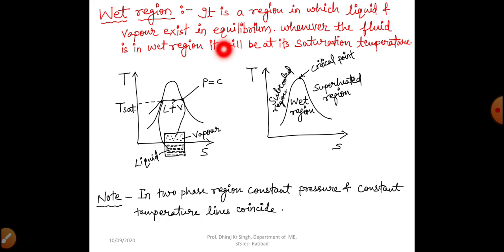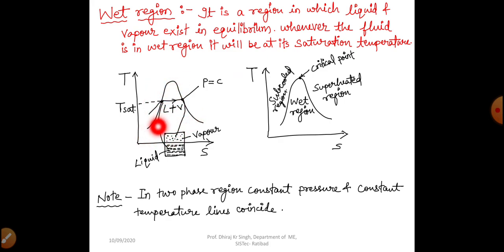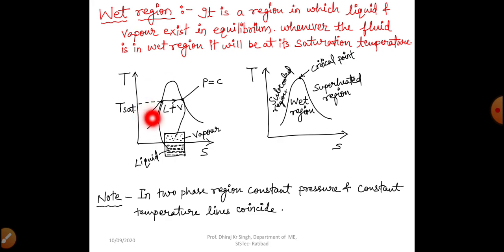Now we will move to the wet region. What is the wet region? It is a region in which liquid and vapor exist in equilibrium; whenever the fluid is in the wet region it will be at its saturation temperature. In the T-S diagram, the region inside this dome is known as the wet region where liquid and vapor both co-exist. Left to the saturated liquid line is the subcooled region where complete liquid exists, and right to the saturated vapor line is the superheated region.